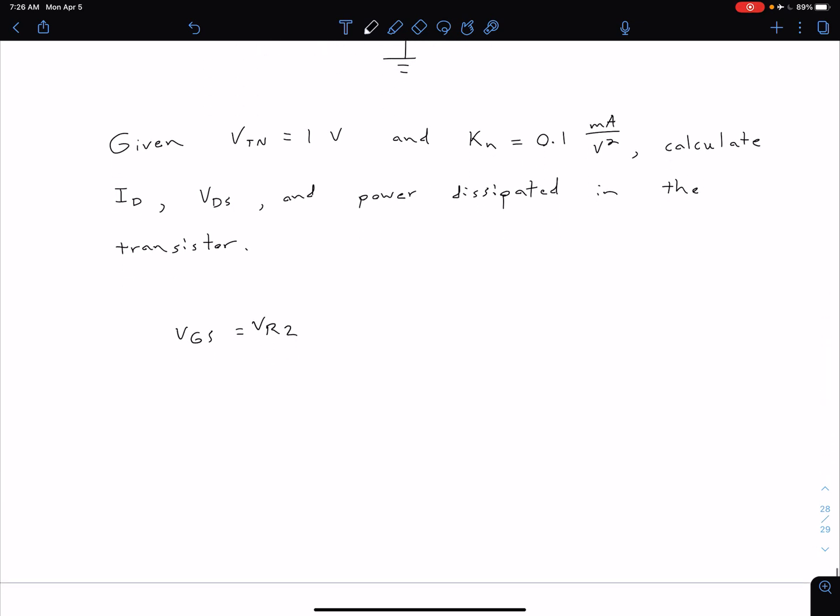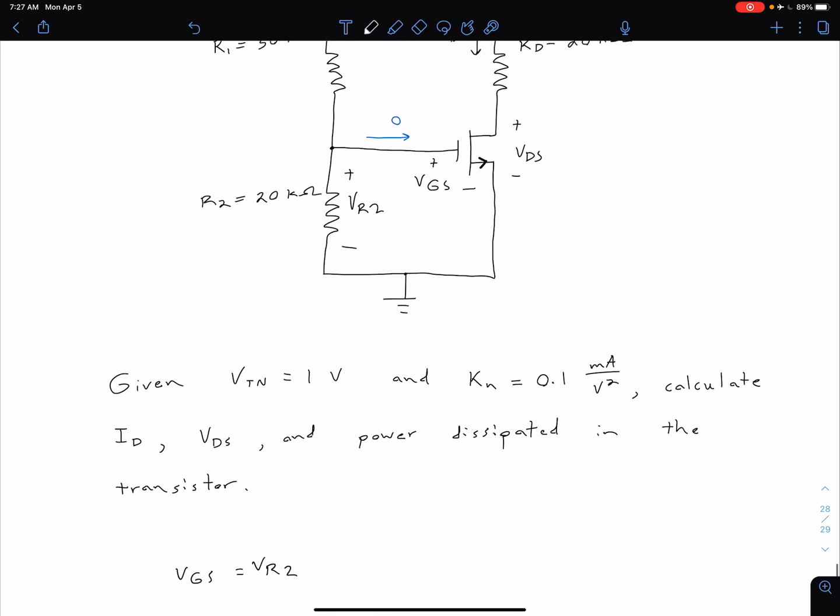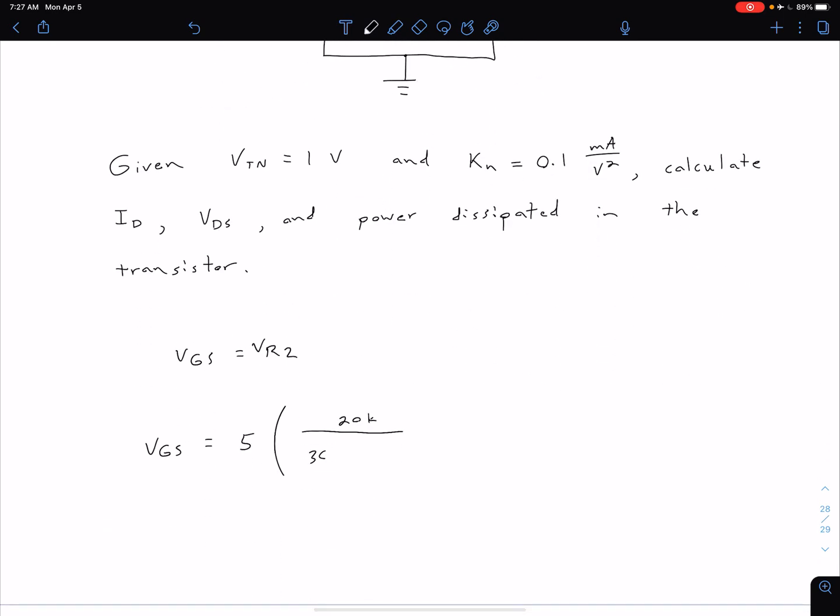So let's do voltage division. We can say VGS, which is equal to VR2, is going to be that input VDD, which was 5 volts, times our R2, which was 20k ohms, divided by R1 plus R2, which is 30k plus 20k. And so that's going to give us a value of 2 volts.